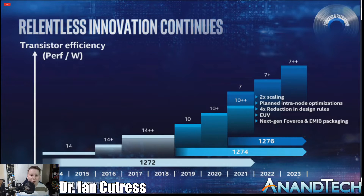These updates have historically happened for pretty much every process node — going back to 22nm, 32nm, 45nm, 65nm, 90nm. These updates used to be sort of run-of-the-mill things. And they still are. It's just that previously they weren't advertised.